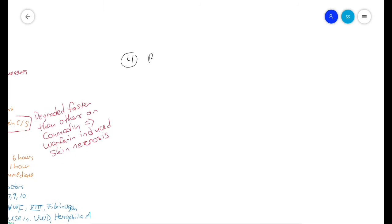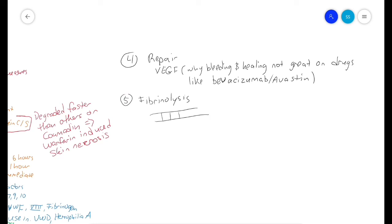After the coagulation cascade forms the fibrin plug and you have a clot, the vessels need to repair themselves. Repairing the tissues involves factors such as VEGF (vascular endothelial growth factor). That's why bleeding and healing are not great on drugs like bevacizumab (Avastin), which is a VEGF inhibitor.